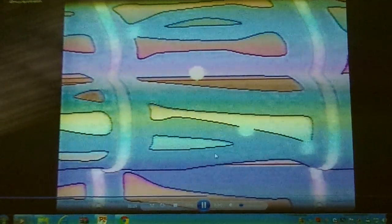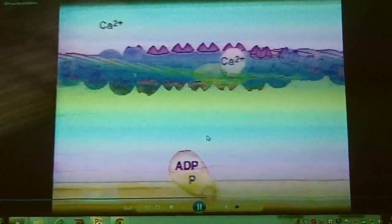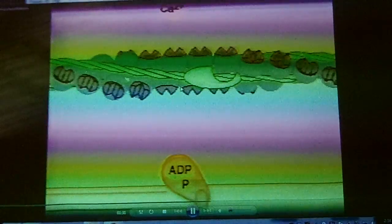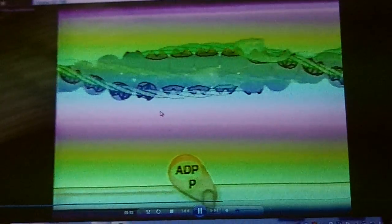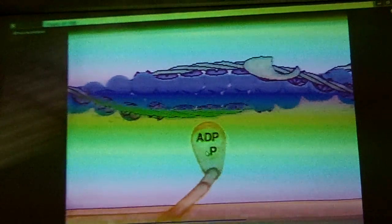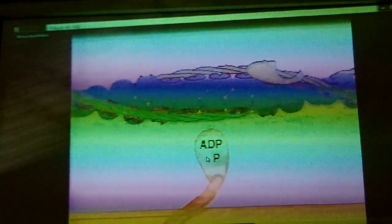The filaments slide past one another. So we call this the sliding filament theory of muscle contraction. Now, hold on. When the signal quits coming, the calcium is released. And the binding sites get covered back up. And so the crossbridges can't attach. Watch. They try to attach, but they can't. Oh, I can't attach. And then the whole thing slides back.